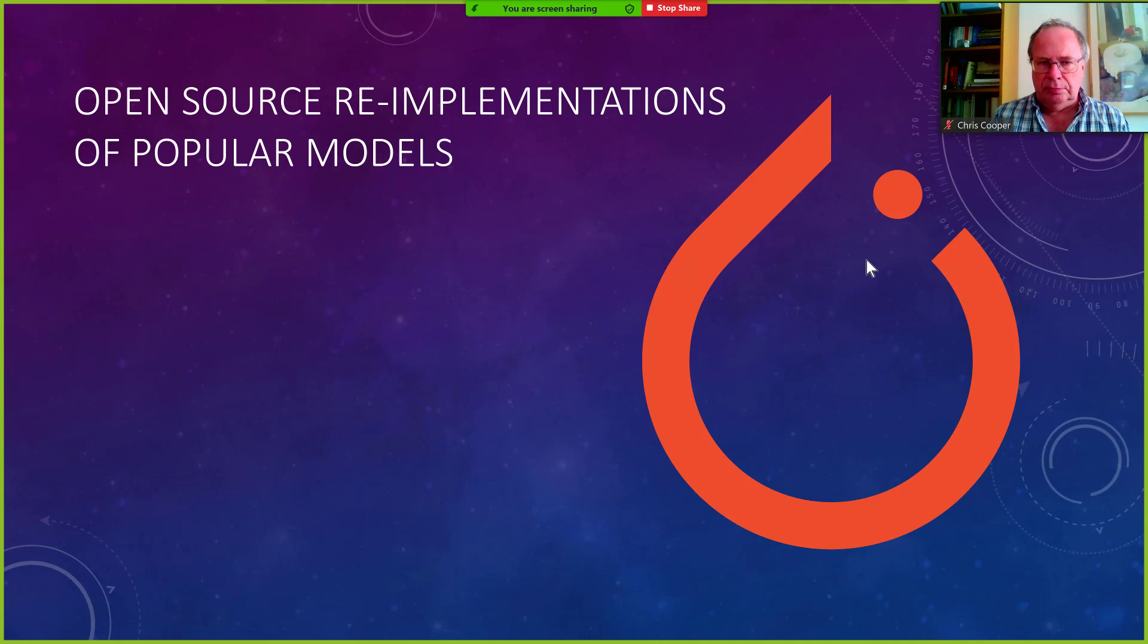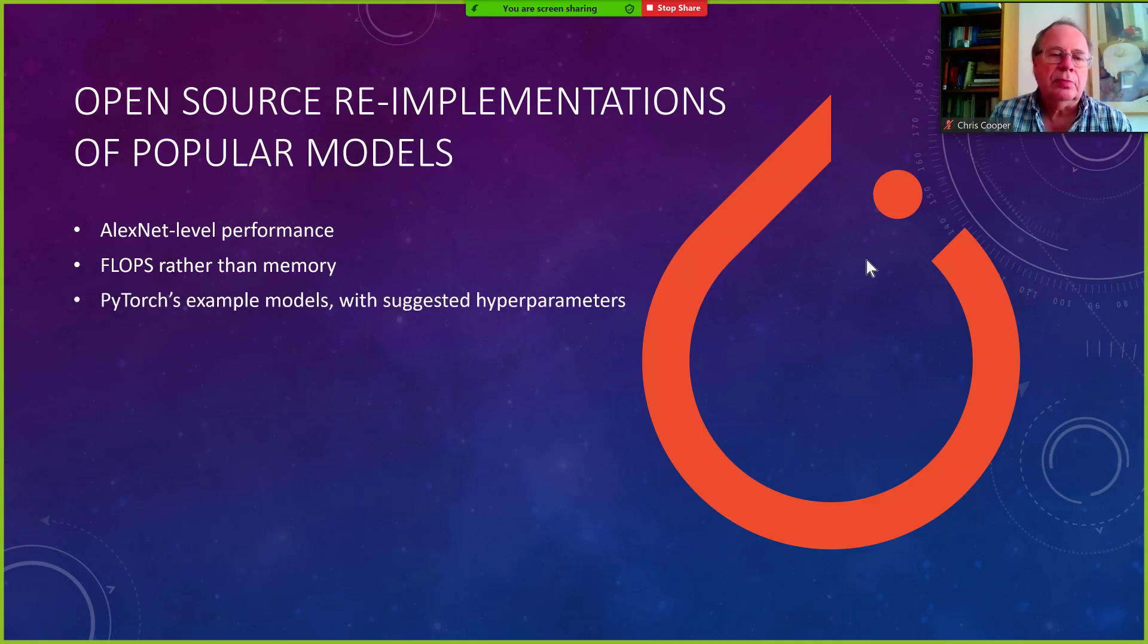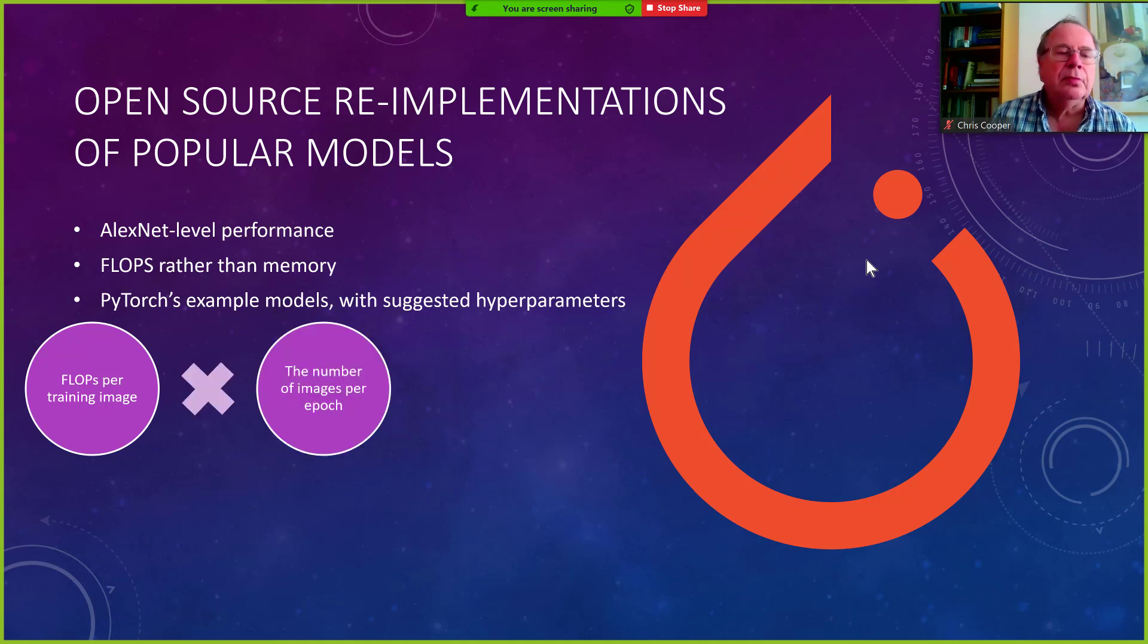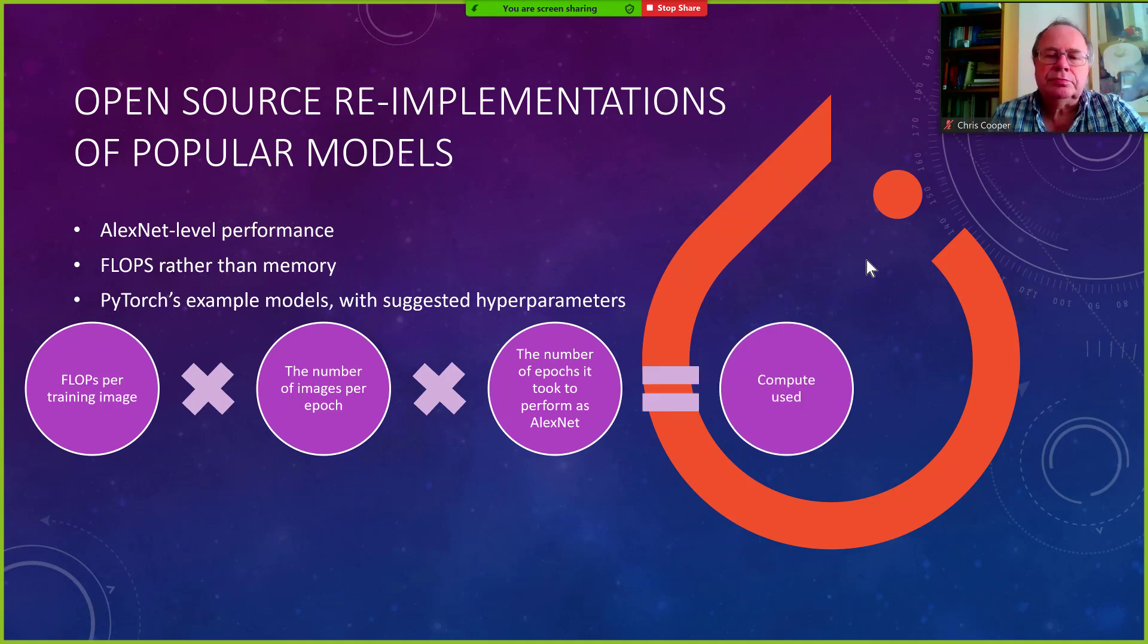So that was the existing. Now for the actual work by Danny Hernandez. This is based on open source re-implementation of popular models, where he has looked at some of these models and looked at what does it take for those to get AlexNet level performance. We are measuring how many floating point operations per second, rather than looking at memory costs. He is using a module called PyTorch, which have implementation of these models, and also have suggested parameters and hyperparameters for them. So the way they are measuring this is having how many floating point operations are required per training image, and then how many images per epoch.